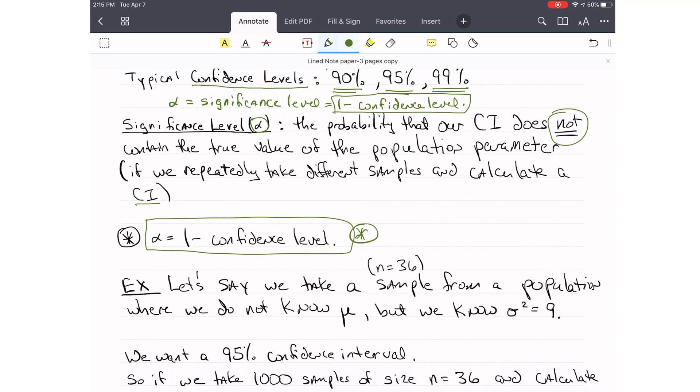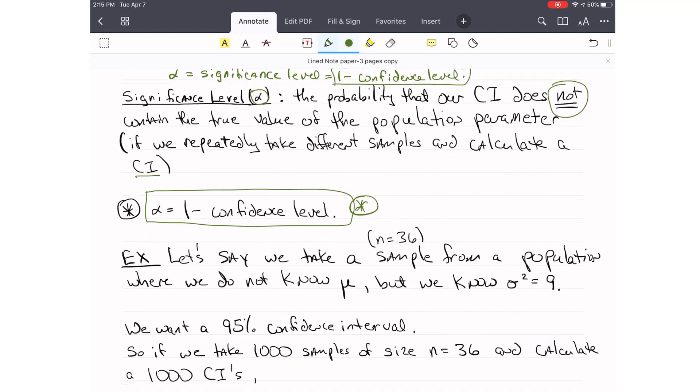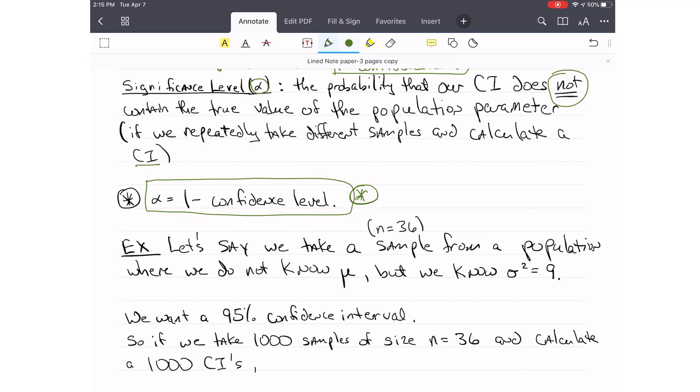Let's talk a little bit more about an example of what this confidence level means. Let's say we take a sample of n equals 36 items from a population, and we do not know what mu is. Up until now, our problems have been telling you what mu is and what sigma is. But now, we don't know what mu is, which is common, but we're going to say that we do know sigma squared or sigma. If you know one, you know the other. Now, this is not a very realistic situation in real life, but it's the easiest situation, and so we are going to show you how to do it this way, and then we're going to go into the real life situation, how we do this